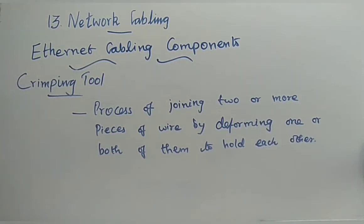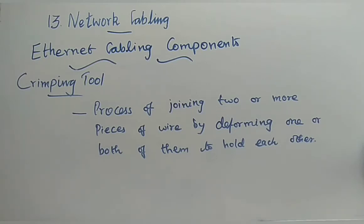Crimping is about adjusting. We have seen the connector and now we insert the wire into it — adjusting the shape so the wire fits. Crimping is the process of joining two or more pieces of wire by deforming — that is, adjusting or changing — one or both of them to hold each other.